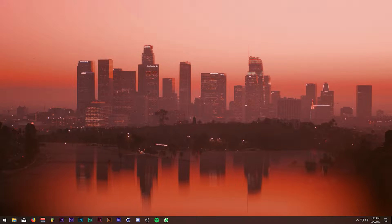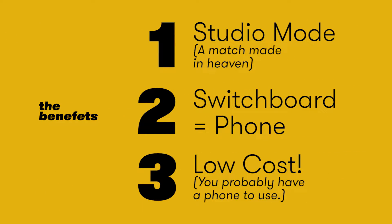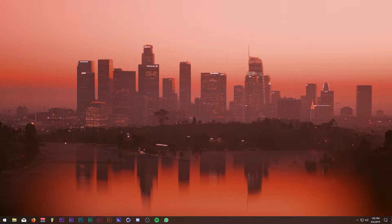The benefits of this setup: first, if you use this in tandem with studio mode, it allows you to call up your scenes anytime just using your phone. It lets you use your phone as a switchboard as opposed to buying an external stream deck for 150 to 250 or more dollars. This app allows you to put as many buttons as you'd like, use custom macros and key bindings, and you can even use it to trigger sounds, using your phone as a soundboard as well.